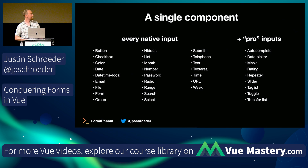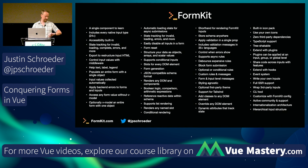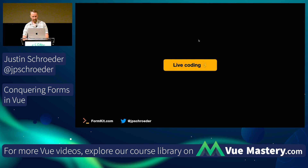Validation is right on the component — you just type it on there. You say 'validation: required, minimum of 2'. It ships with dozens of validation rules. There are a lot of features to FormKit — way too many to spend time talking about today. So I'm going to try some live coding and we'll see how it goes.